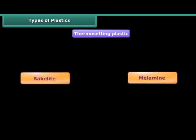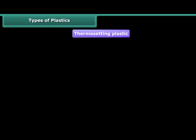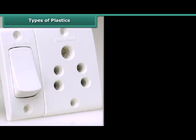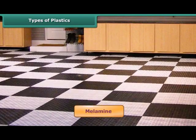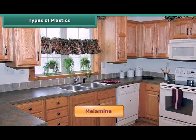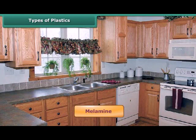Bakelite and melamine are two examples of thermosetting plastics. The familiar electrical switches and handles of utensils are made of bakelite as it is a poor conductor of heat and electricity. Whereas melamine is used for making floor tiles, kitchenware and certain fabrics as it is fire resistant.